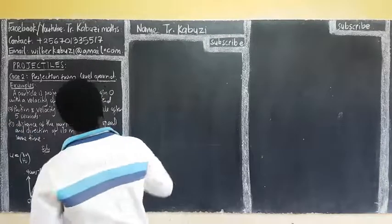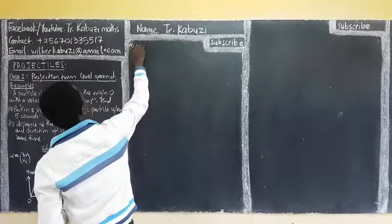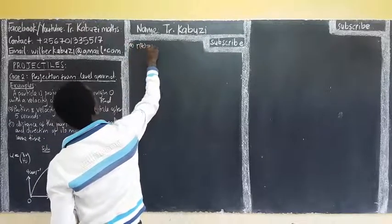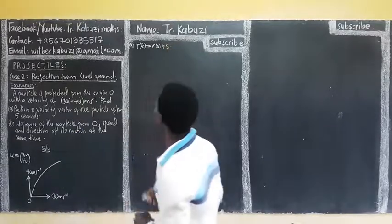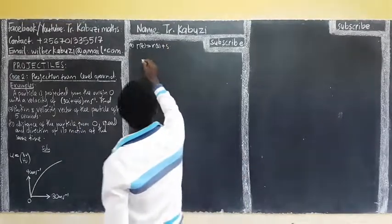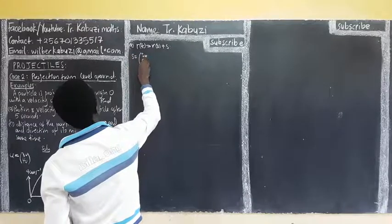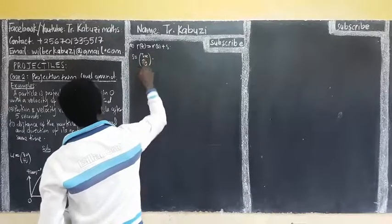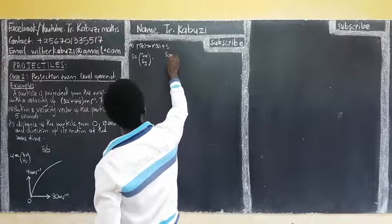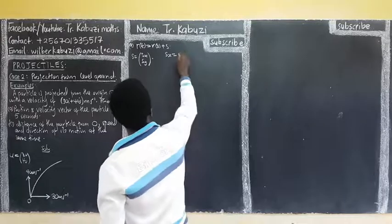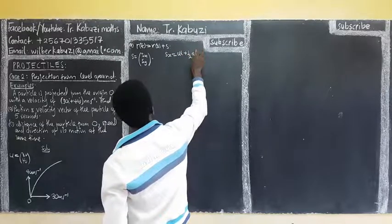It means that if they want the position, remember our r. Our r(t) is given by r₀ plus s. Where s is given by sx and sy. Can we get these ones first? Our sx is given by, if we consider u·t plus a half·a·t squared. So our sx is going to be ux times t.